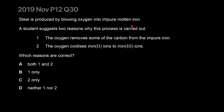Steel is produced by blowing oxygen into impure molten iron. One student suggestion is that oxygen removes some carbon from the impure iron - this is true, since steel has around 1% carbon and too much makes iron brittle. The oxygen reacts with carbon to form carbon dioxide which escapes. The other suggestion - that oxygen oxidizes iron to iron(III) ions - is completely false, because you're starting with molten iron which has no charge, and the product is also pure iron. So only one reason is correct, which is B.